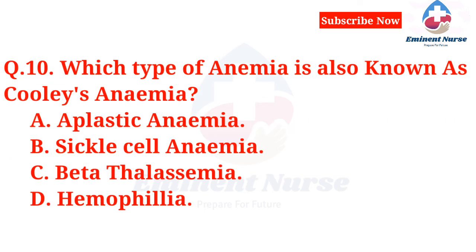Which type of anemia is also known as Cooley's anemia? A. Aplastic anemia. B. Sickle cell anemia. C. Beta-thalassemia. D. Haemophilia.